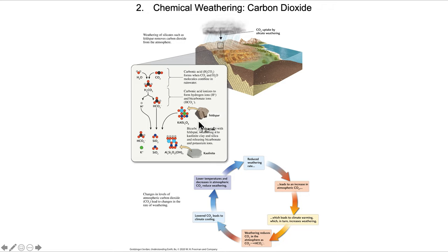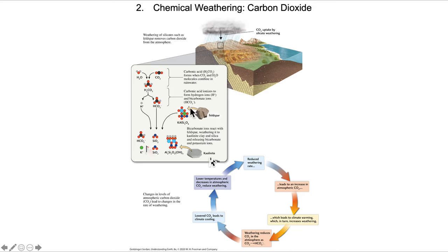The net result is that bicarbonate ions react with feldspar, weathering it to kaolinite — a very common clay found in coffee whitener, ice cream, and candy bars, because it has no flavor, is non-toxic, and adds mass. The net result is a residual kaolinite deposit — converting a large granitic body of rock into clay and quartz sand grains.